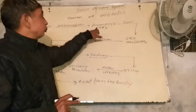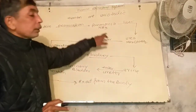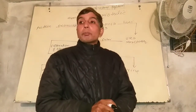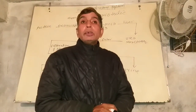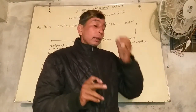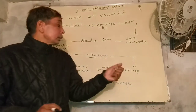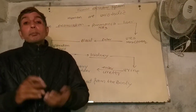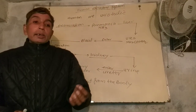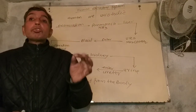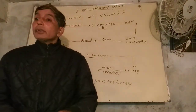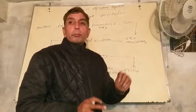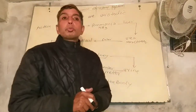Ammonia is basic in nature, and urea is acidic in nature. The pH of urine is 6.8, making urine acidic. These waste products are removed from the body from time to time.